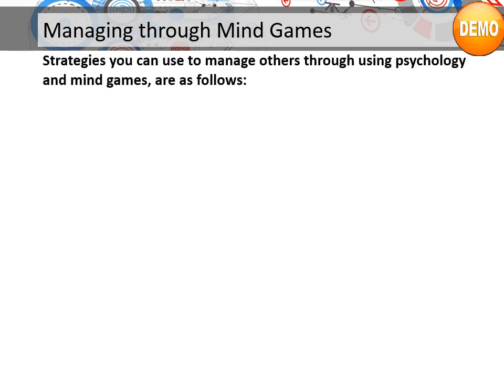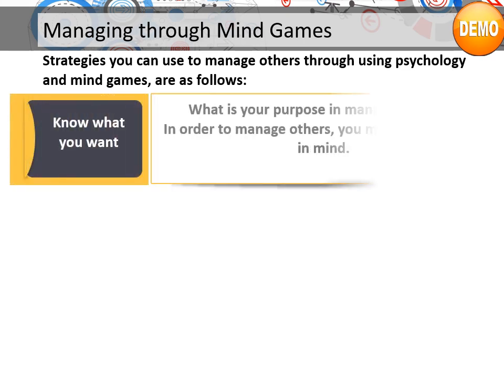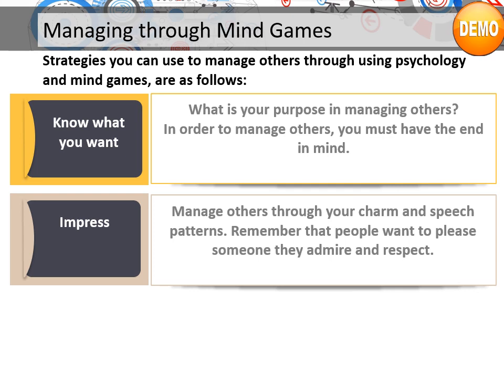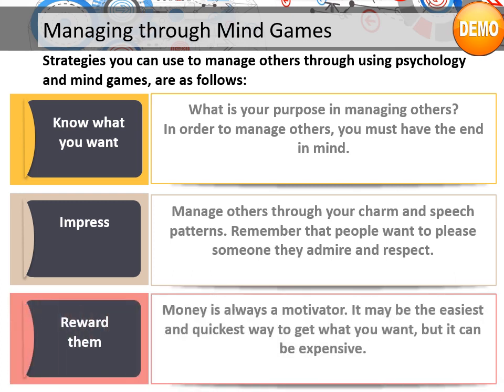Managing through mind games: strategies you can use to manage others through psychology and mind games are as follows. Know what you want — what is your purpose in managing others? In order to manage others, you must have the end in mind. Impress: manage others through your charm and speech patterns; remember that people want to please someone they admire and respect. Reward them: money is always a motivator — it may be the easiest and quickest way to get what you want, but it can be expensive.